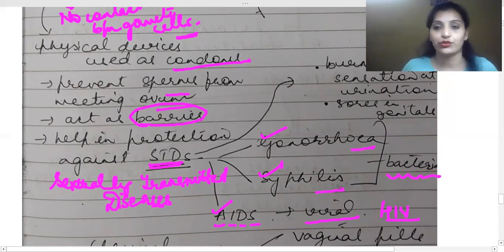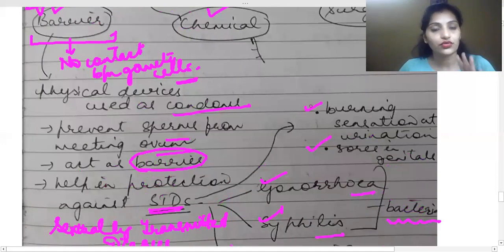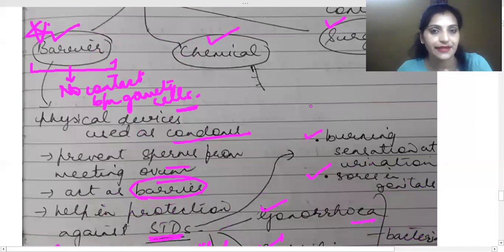There are many STDs. What kind of symptoms can be seen? That is, burning sensation at urination. If urine passes, you tend to get burning sensation. Then the genital organs, the private organs, it becomes very sore. So these are STDs. STDs are bacterial, viral, and our barrier method is clear.